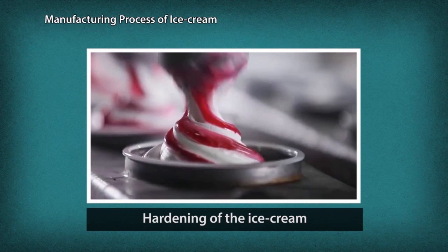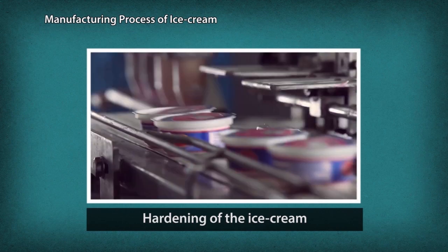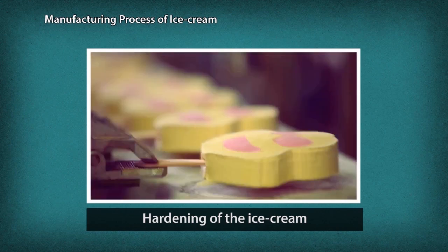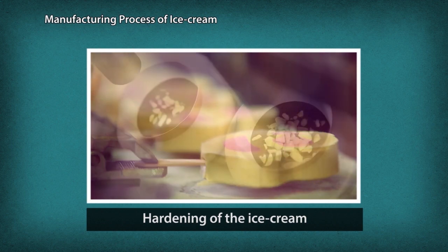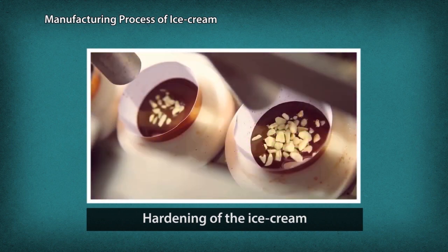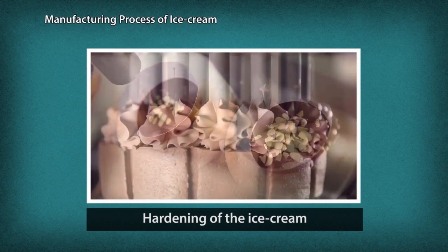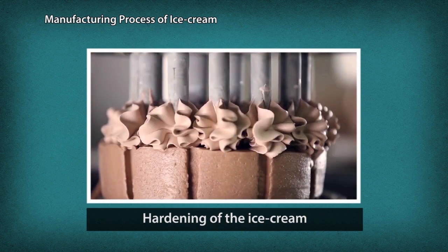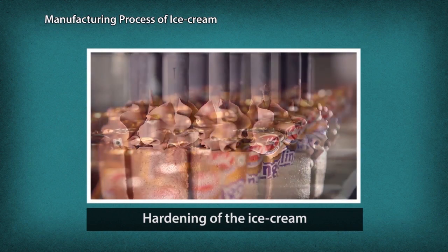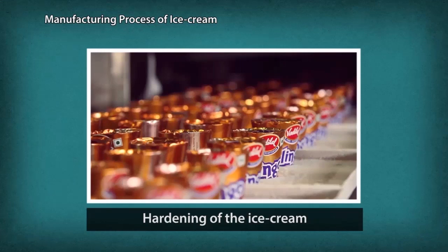The ice cream mix is then poured directly from the freezer into containers, cups, or molds and is cut to different shapes and sizes. Fruits, nuts, and other decorations are added as required to selected items while filling.